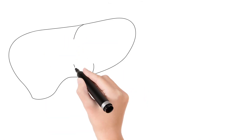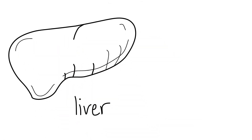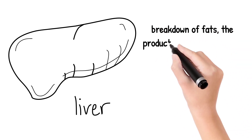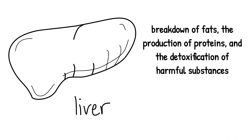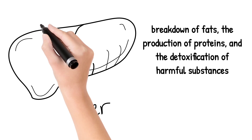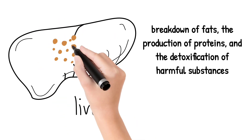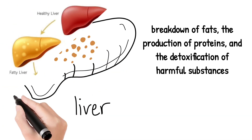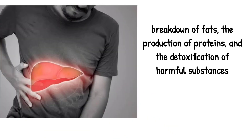The liver is an essential organ that performs a number of important functions in the body, including the breakdown of fats, the production of proteins, and the detoxification of harmful substances. When excess fat accumulates in the liver, it can interfere with these functions and lead to inflammation and scarring. Over time, this can lead to serious complications, including liver failure.